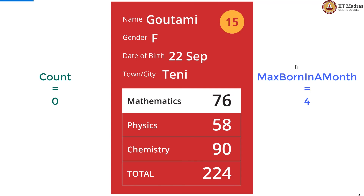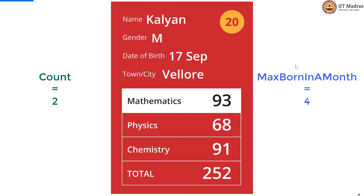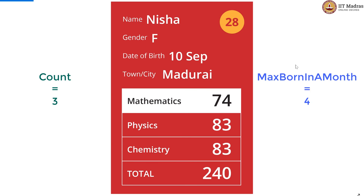count is re-initialized to 0 and incremented by 1 for the month of September. 2 September, 3 September, and this is the last card — there is no card after this. We do not need to update max. Max has been at 4, and that is the maximum number of students born in a particular month. Thank you.